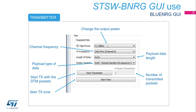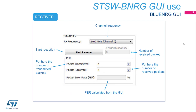Output power selection — check that the high power tick is enabled as per default. Channel frequency selection. Payload data length and payload data type selectors. Start Transmitter button to start the transmission with a DTM packet. Start Tone button to transmit a single carrier wave. And the number of transmitted packets indication. On the receiver side: channel frequency selection, Start Receiver button to start reception, and the number of received packets indication. For the packet error rate calculation, the user inserts the number of transmitted packets and the number of received packets; the GUI will calculate the PER in percentage.